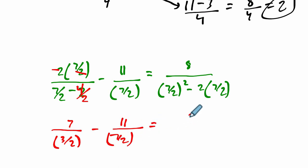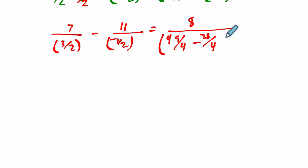Over here, I get 8 over, tons of fun here, 49 fourths minus 7, which is really 28 fourths. Now, 7 over 3 halves, right? We do 7 times 2 thirds, which is 14 thirds, minus 22 sevenths. That should equal this over here, which is 8 over 49 minus 28 is, let's see, 19 plus 2, 21 fourths.